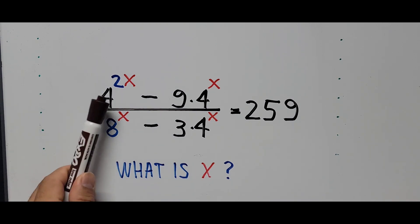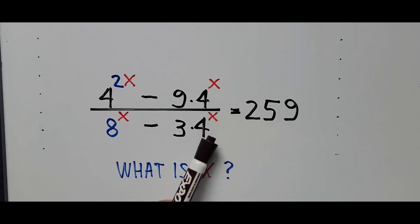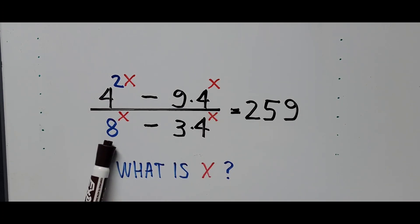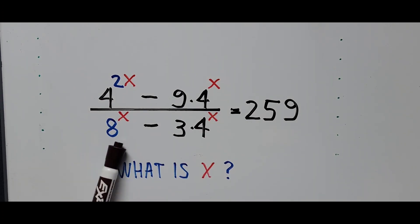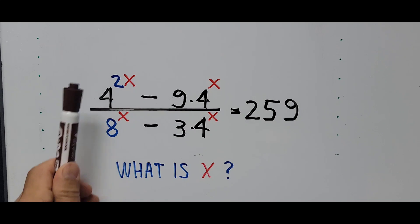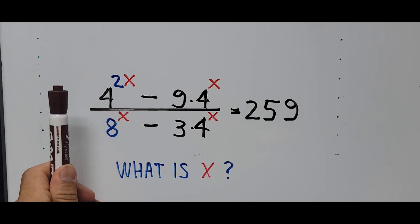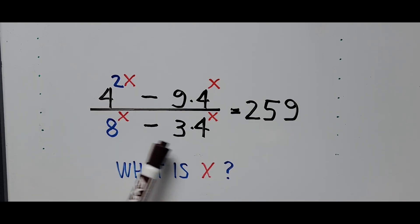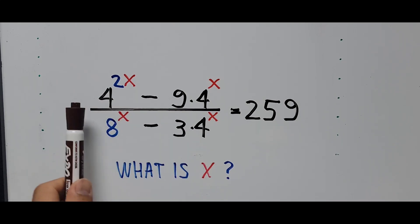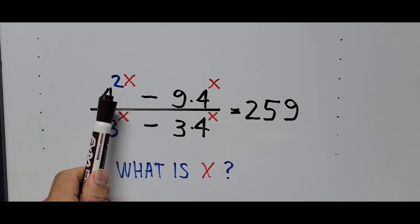We have 4 here but we also have 8. So as much as possible we try to convert 8 in terms of base 4, noting the exponent 2 right there.